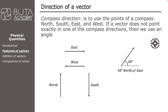We can follow similar steps for the next vector. The angle between the west direction and the vector is measured as 40 degrees. As a result, we can define the direction of this vector as 40 degrees south of west.